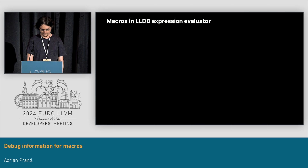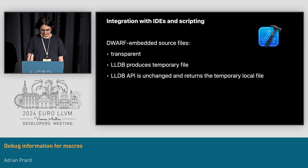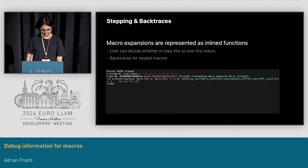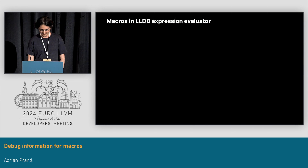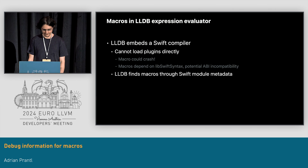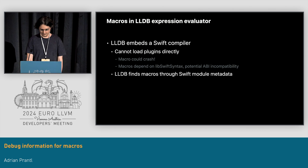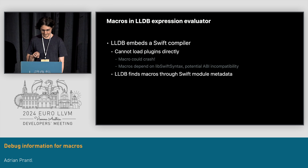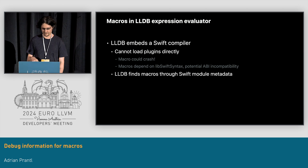The fact that macros are compiler plugins creates some interesting challenges for LLDB's expression evaluator. LLDB's embedded Swift compiler can load macros. But what if a macro implementation crashes? What if it's for an older Swift version with a different ABI? We solved this problem by running all macros through the appropriate Swift plugin server that ships with the toolchain that's compatible with the plugins. This both isolates the process running the macro and fixes the ABI incompatibility problem.